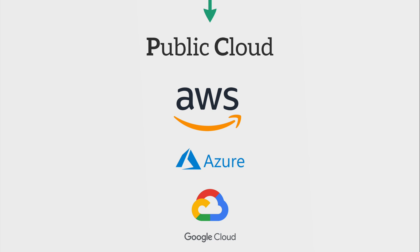Public cloud is where it gets interesting. This is where companies like Amazon Web Services, Microsoft Azure, and Google Cloud come into play, where we start to rent servers from these providers. We no longer have to worry about space, power, cooling, or messing around with hardware or cables — all that stuff is managed by them. The bottom line is that cloud is somebody else's computer. The fundamentals of computing don't go away, but we don't manage or touch any of the physical stuff.